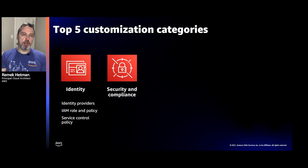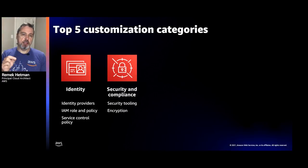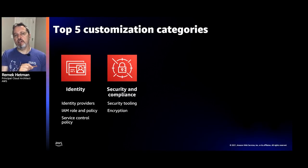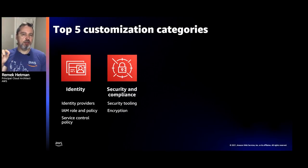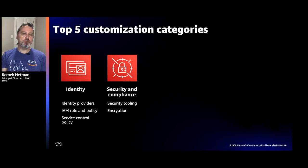The next category is security and compliance. Under this, consider installing security tools like GuardDuty, Security Hub, and Access Analyzer. You should also consider deploying Audit Manager in the audit account. Under the same category, think about encryption — whether you'll use the default AWS KMS key for services, or create your own with specific policies locked down and accessible only inside your organization. This may depend on the policies in your organization.